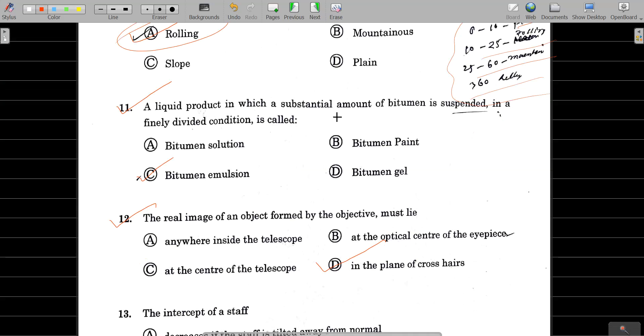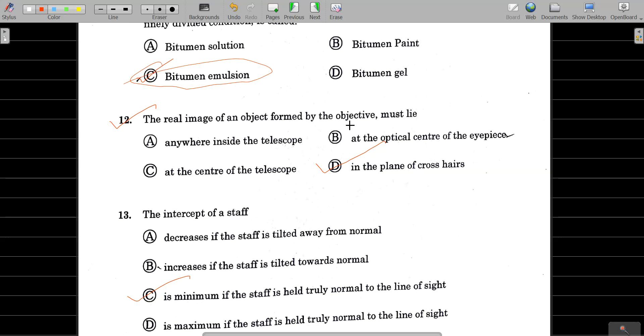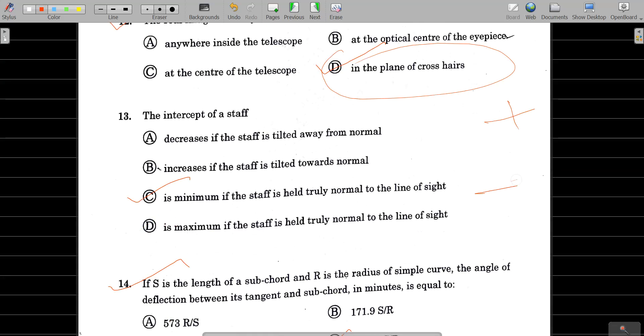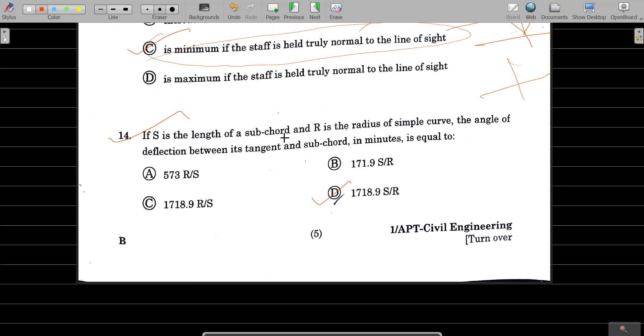Question 11: A liquid product in which substantial amount of bitumen is suspended. Next: the real image of an object formed by the objective. In a telescope, the crosshair is at the plane where the real image is formed in terms of the intercept on staff. The intercept reading will increase if the staff is tilted away from normal, and decrease if tilted towards normal. It is minimum if the stuff is held truly normal to the line of sight.